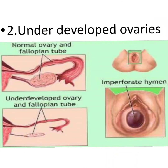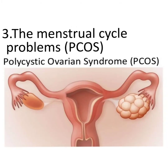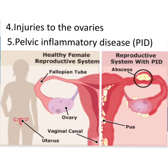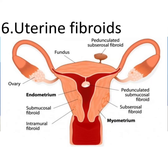Underdeveloped ovaries or fallopian tubes, imperforate hymen, and menstrual cycle problems caused by polycystic ovarian syndrome, injuries to the ovaries, and pelvic inflammatory disease can damage the reproductive system — including the uterus, ovaries, fallopian tubes, and cervix — resulting in damage to the endometrium. Uterine fibroids of different types, such as pedunculated submucosal fibroid, submucosal fibroid, and intramural fibroid, can all cause difficulty in implantation of the ovum.